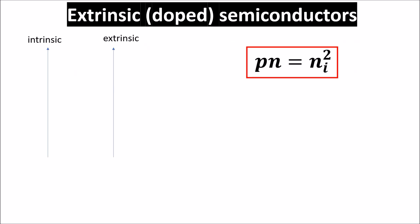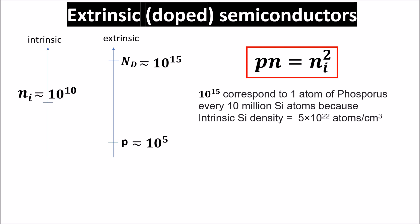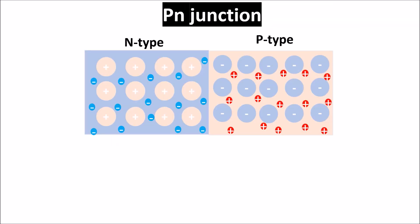In an extrinsic N-type semiconductor, if the intrinsic carrier concentration at room temperature is 10 to the power of 10 and the doping level is 10 to the power of 15, then the number of minority carriers has to be 10 to the power of 5. This is because for low levels of doping we don't change the silicon structure, so the generation level is the same, but we have many more N carriers which, by recombining, lower the P carrier concentration by orders of magnitude. Creating a p-n junction, we have an N-type material full of free electrons and a P-type material full of holes. Even in the N-type material we have some free holes as minority carriers, and in the P-type we have some electrons as minority carriers.